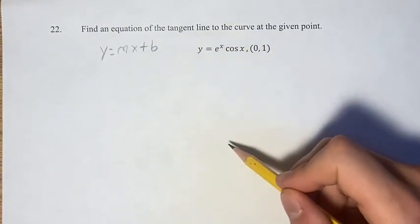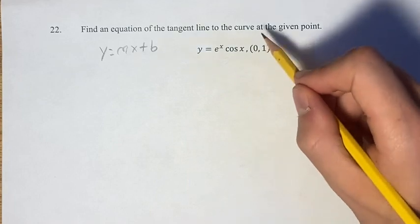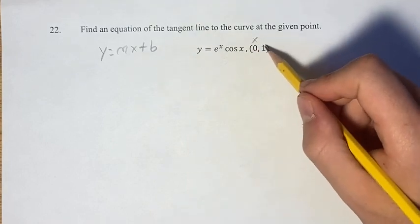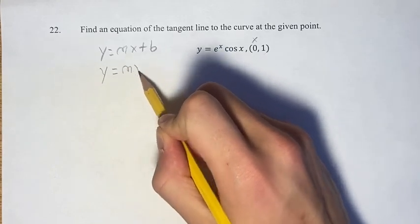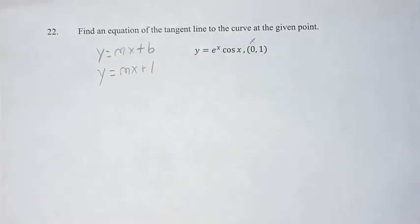If this line is going through the point (0, 1), then this is a point where x equals 0, and we have our value of 1. So this is your y-intercept. Before we do anything, we can just plug in and get y equals mx plus 1.